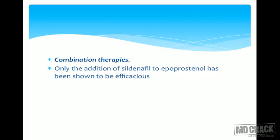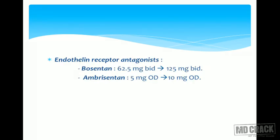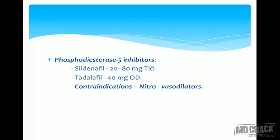Regarding endothelin receptor antagonists: bosentan should be started at 62.5 mg BD and can be increased to 125 mg BD. For phosphodiesterase-5 inhibitors — sildenafil — the dose is 20 to 80 mg three times a day.